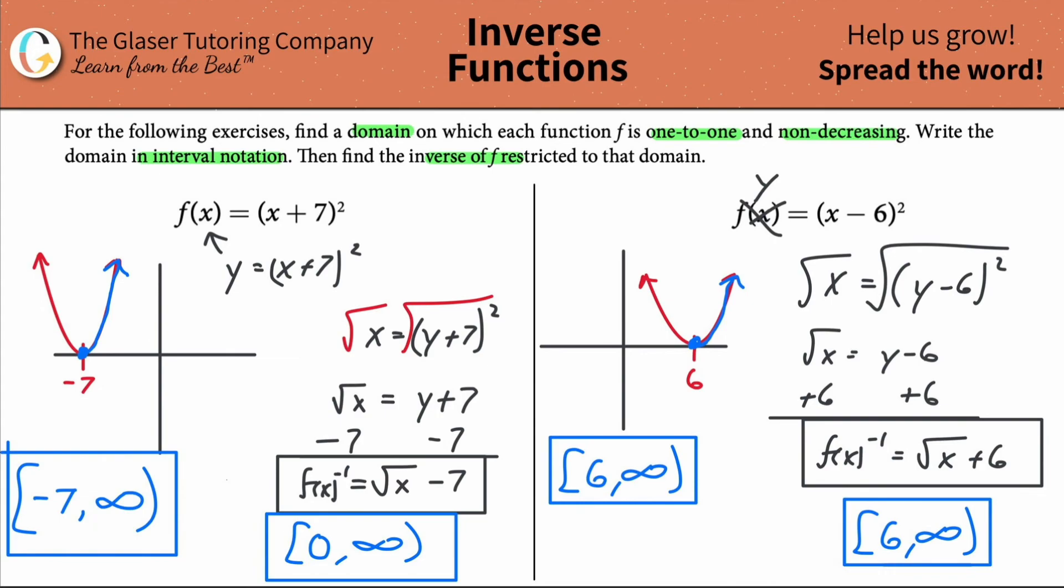Since 5, 4, 3, 2, 1 doesn't fall within the required domain of being non-decreasing for the original function, then it should not be inclusive then of the inverse function. I think that's what the wording kind of means because it says find the inverse of f restricted to that domain.